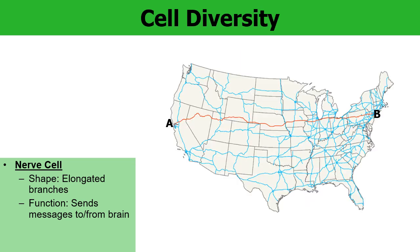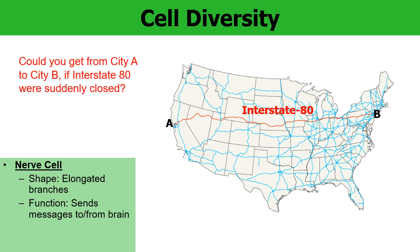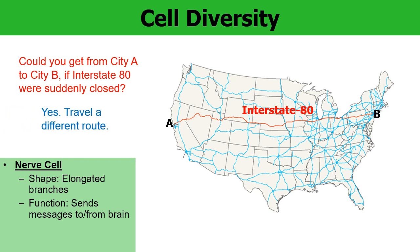Here's an analogy — here's a map of the United States where the lines represent major highways across the country. The red line is Interstate 80, which runs east and west across the United States. Ask yourself: could you drive from City A to City B if Interstate 80 were suddenly closed? The answer is yes, most definitely — you just have to take a different route. Interstate 80 is the most direct route, but you could zigzag up and down and around and eventually still get from City A to City B.